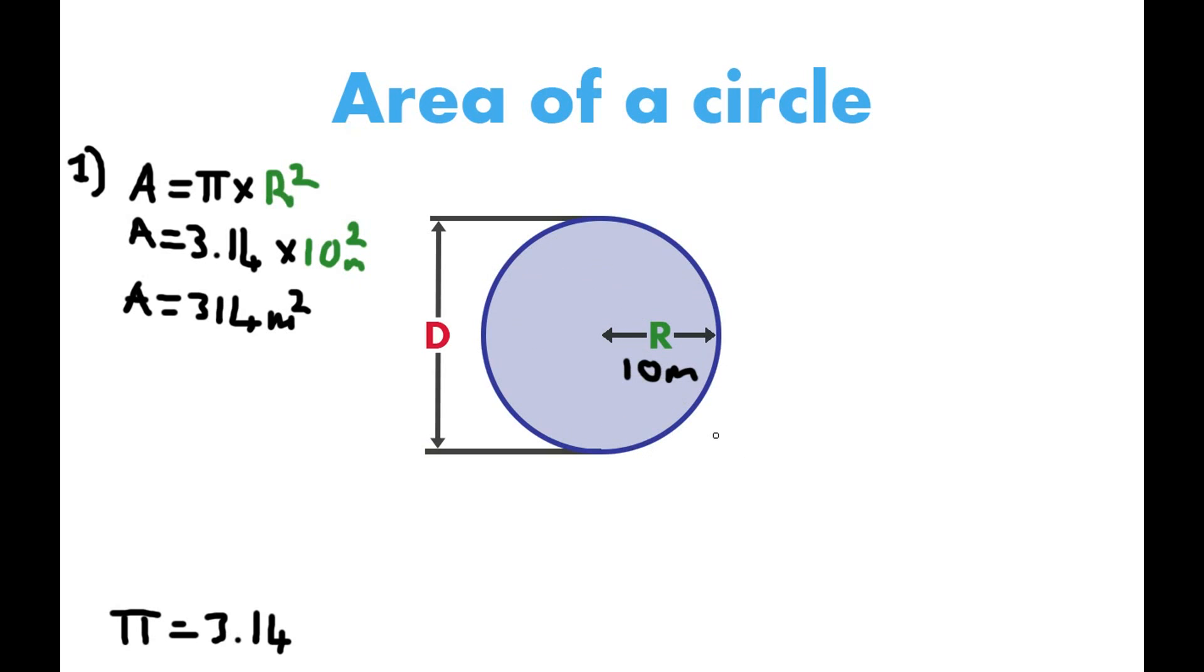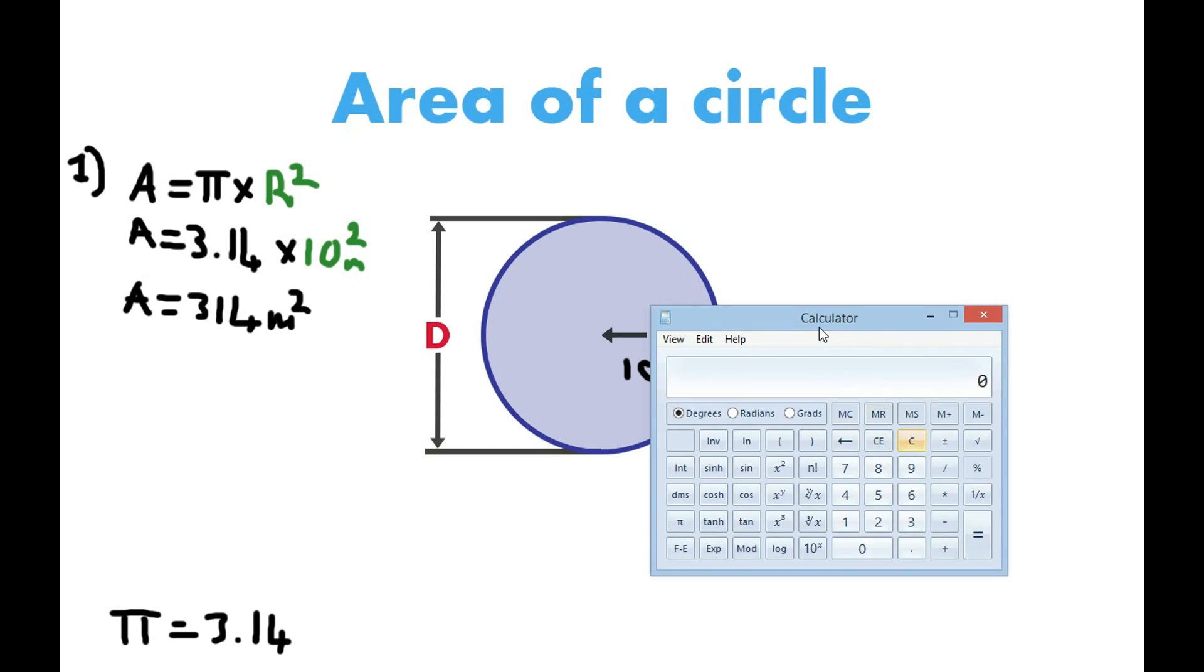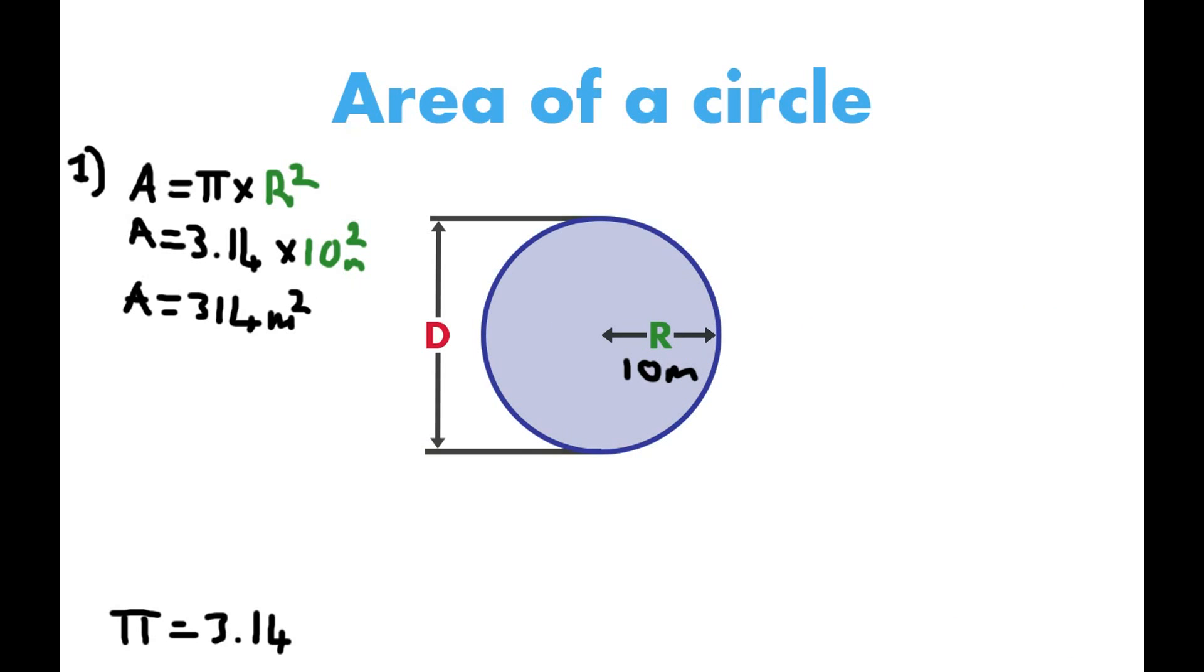We'll just show you that on the calculator. So π, you can see there's a longer version of the number there, but it is too long—we don't need that for the precision we're going for. Just two decimal places, 3.14, will be fine. So 3.14 times 10, and square it. Don't forget to square it—10 squared—and we square the 10 equals 314 meters squared.